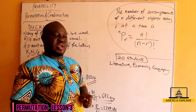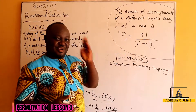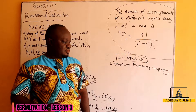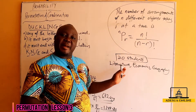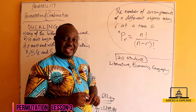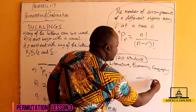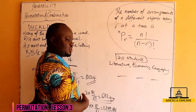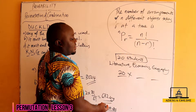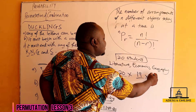Now, the question is: in how many ways can the award be given? The awards for literature, economics, and geography can each be awarded to only one student. In how many ways can we award literature? We shall have 20 ways. The next person — since the previous winner can't take another award — gives us 19, then 18.